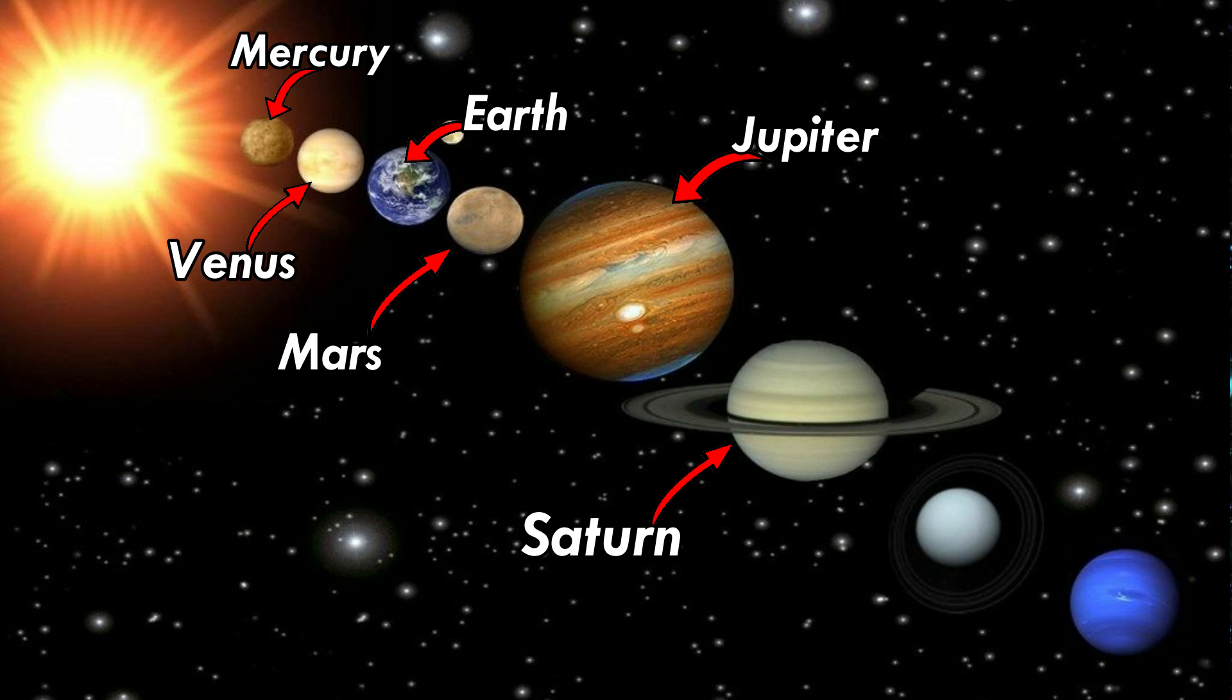The sixth planet is Saturn. Oh, gotta love those rings! The seventh planet is Uranus. And the eighth planet, the farthest planet from the sun, is Neptune.